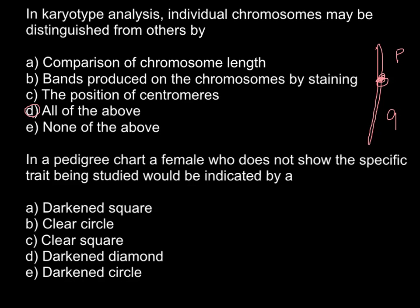Second question: In a pedigree chart, a female who does not show a specific trait being studied would be indicated by — and here are once again five answers. Answer A is a darkened square. A square is how we designate a male, and if it is filled in, that means this male is affected with some genetic disorder or shows the presence of some trait.